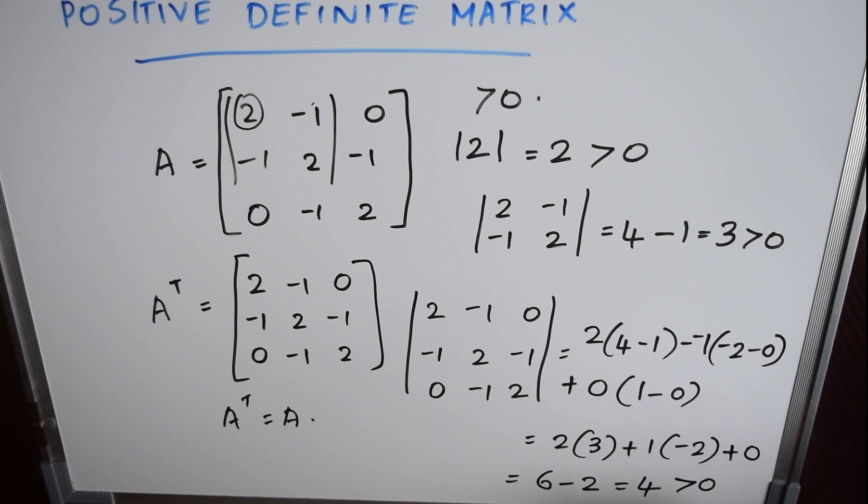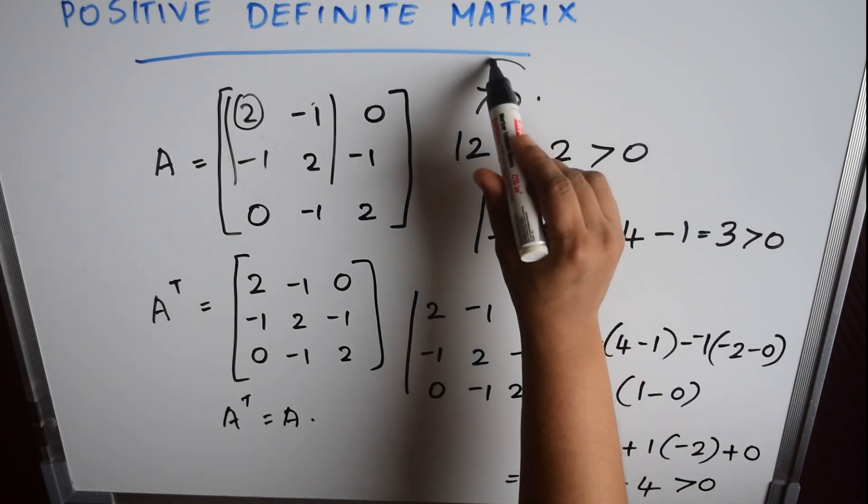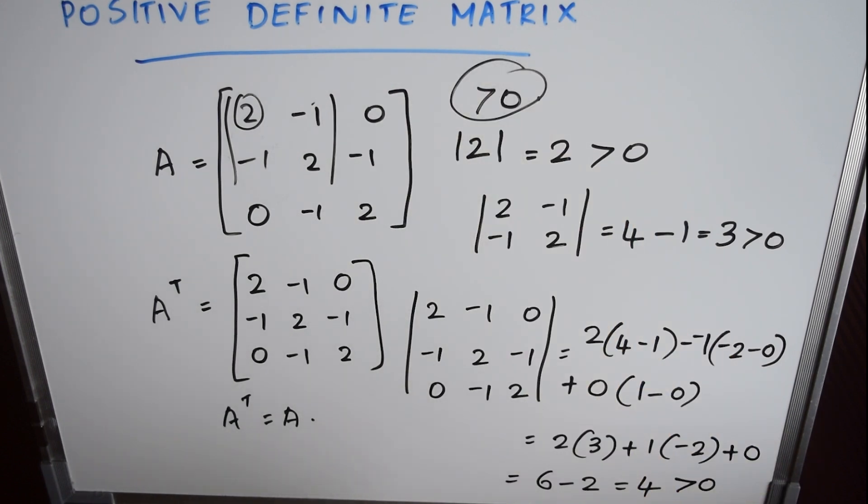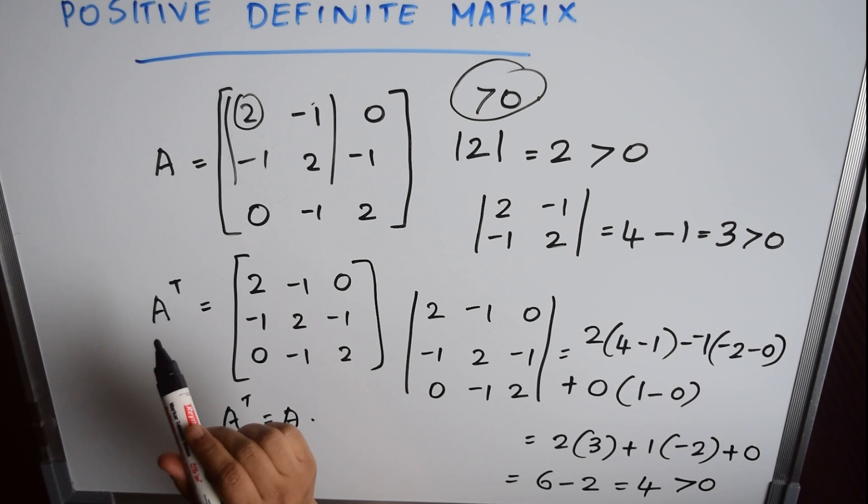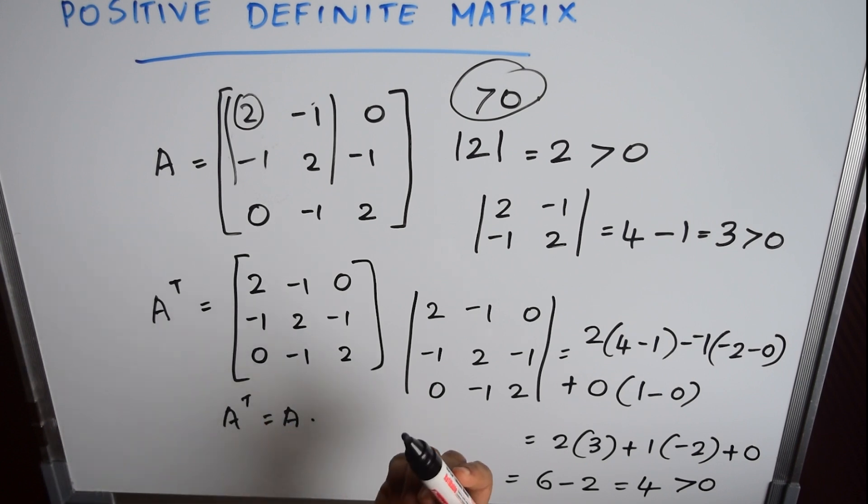Here it has satisfied the condition that all upper left determinants are greater than 0, and hence matrix A is a positive definite matrix. This is how you find if a matrix is positive definite.